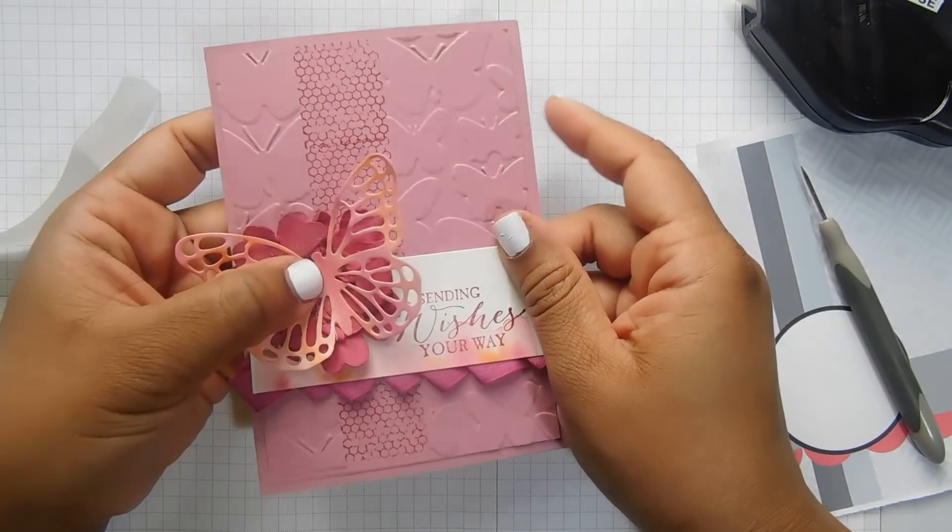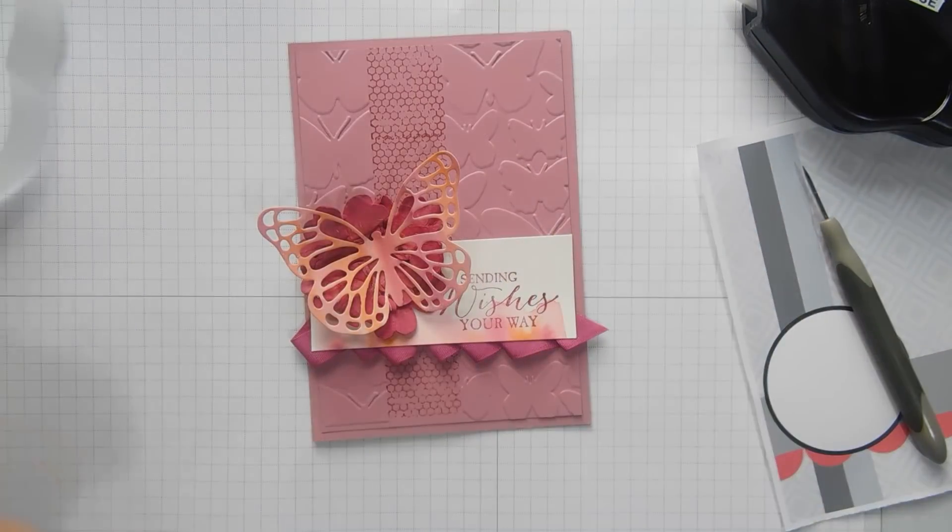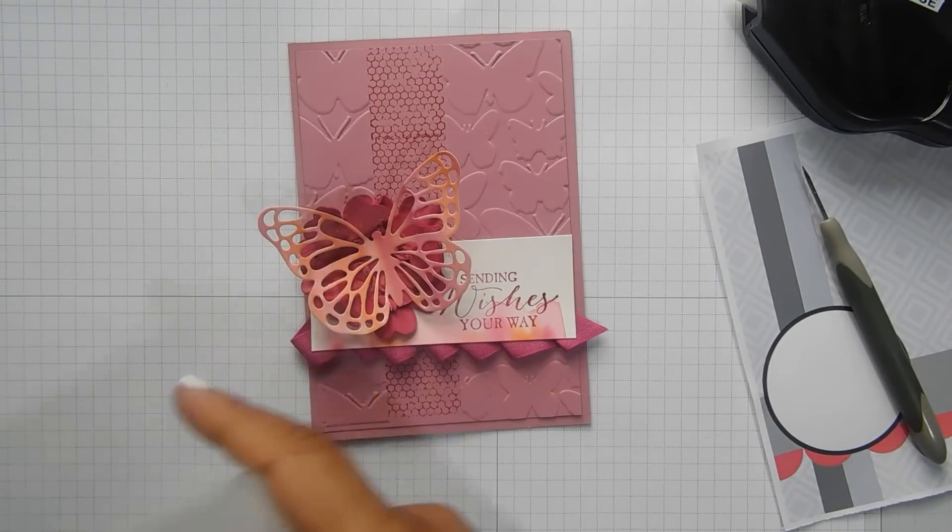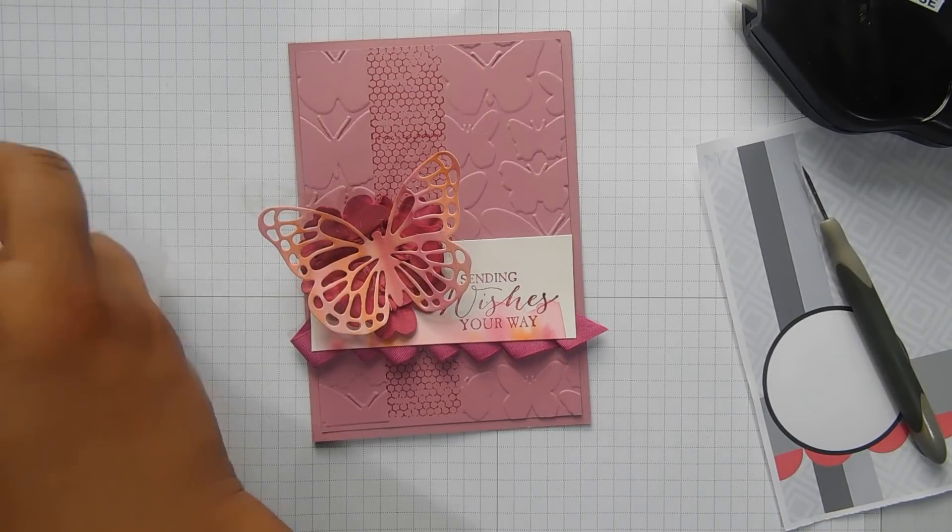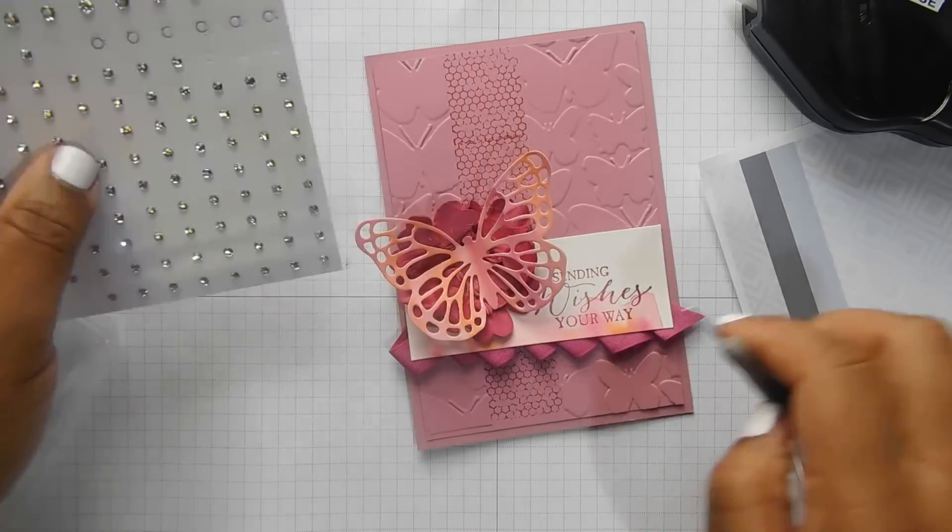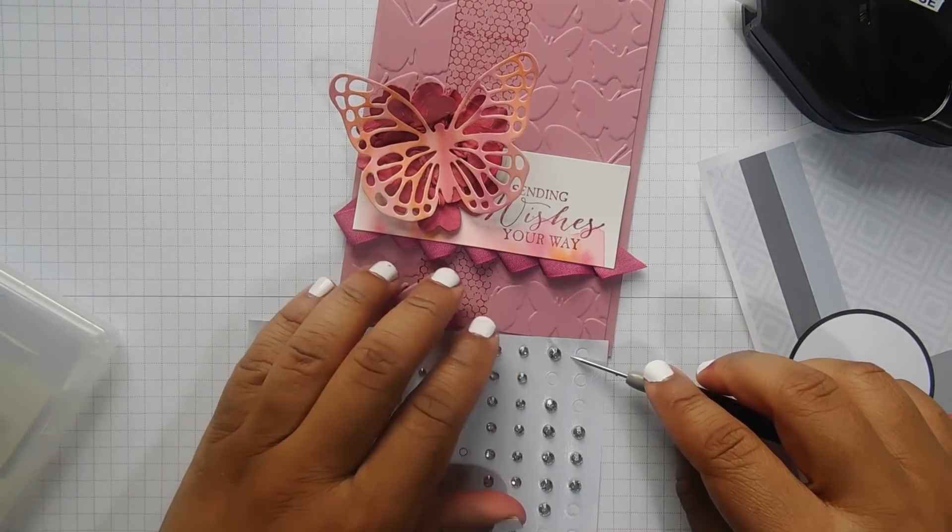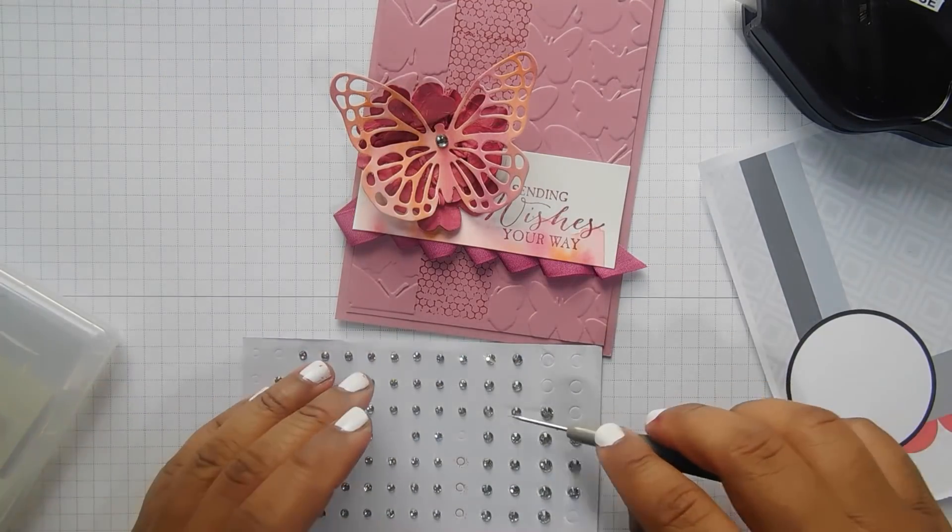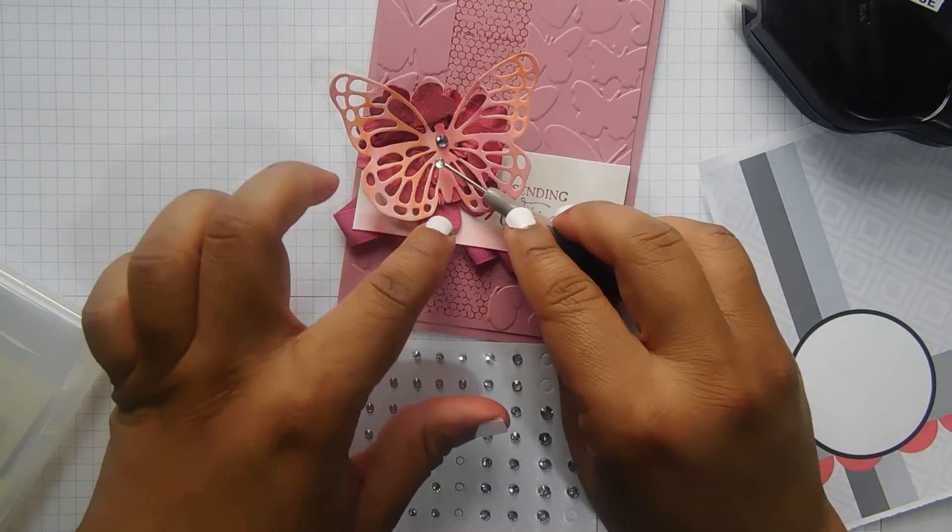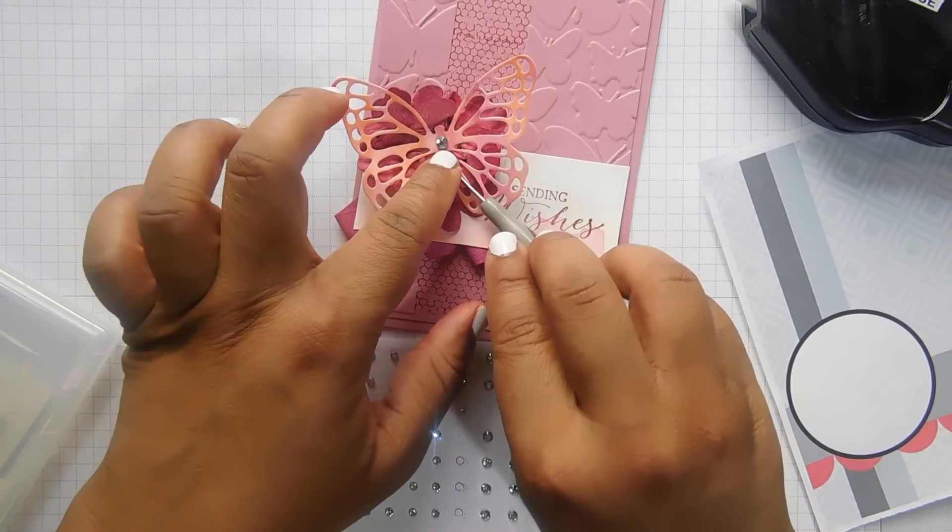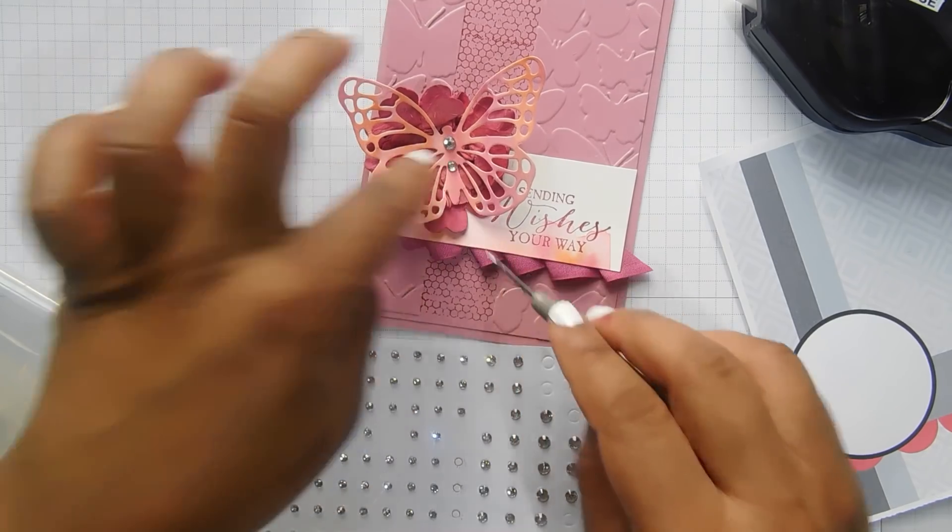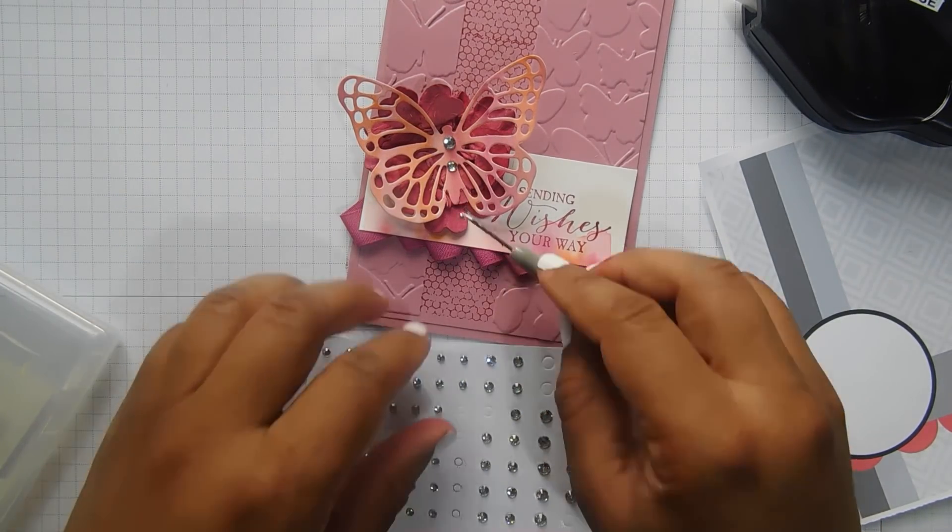And I do think you need some more bling. You can never have too much bling on a butterfly. So we'll get some rhinestones on him. And then the next size down. Then the little one.